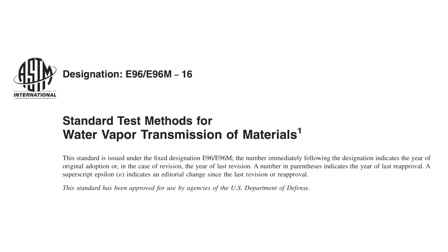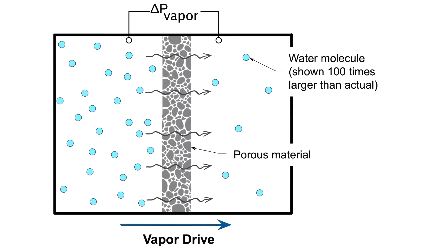This is what vapor permeance testing like ASTM E96, the most common type in North America for building materials, is focused on. Water vapor diffusion occurs when there's more water vapor on one side of a layer of material or an assembly than on the other.